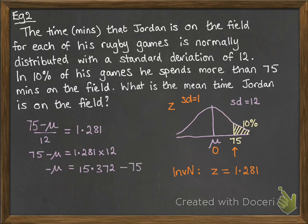We're then going to subtract the 75. So minus μ becomes minus 59.692, and then, of course, that means that μ is 59.692.